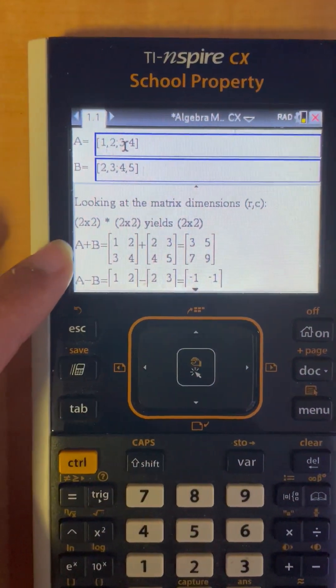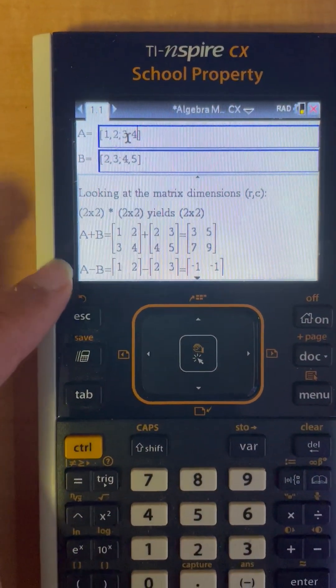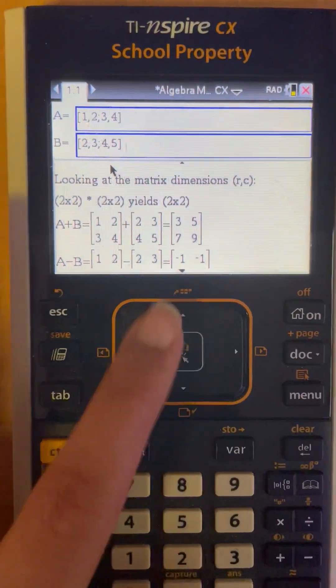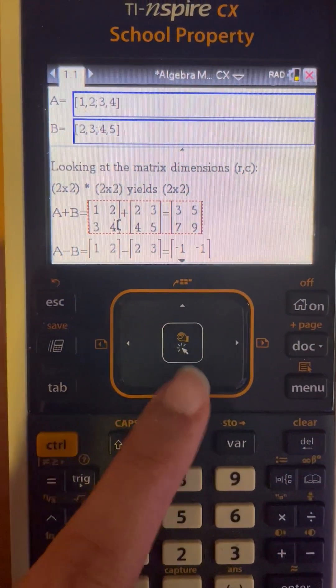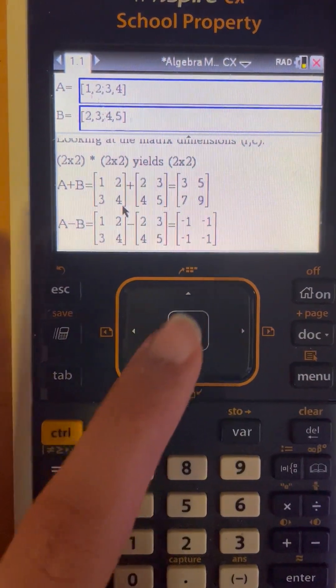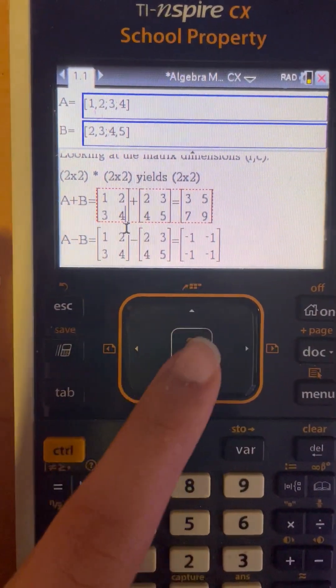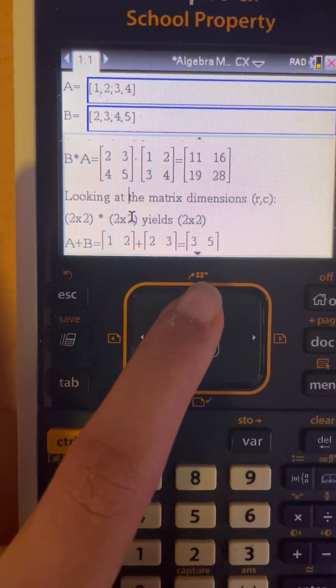And I can show you here. First, we have A plus B, we have A minus B, bring my cursor down here. All right, going down more, actually I think I have to go up to show you guys the other ones.